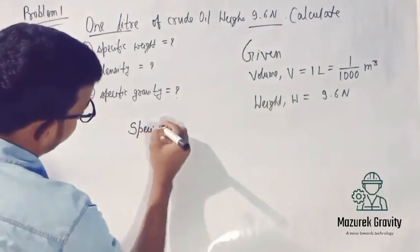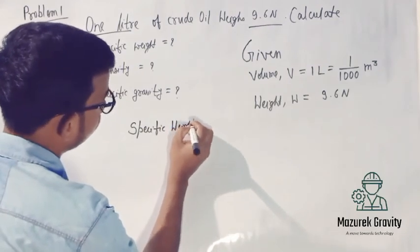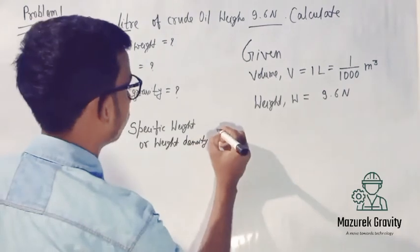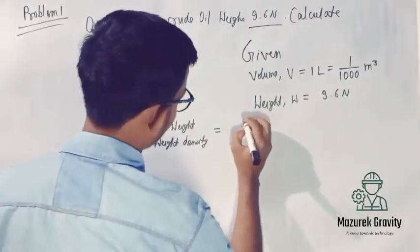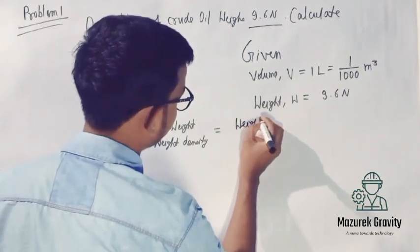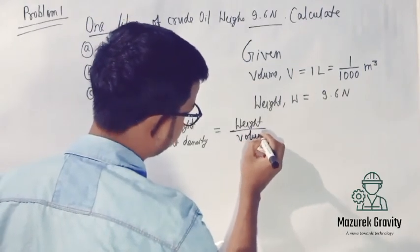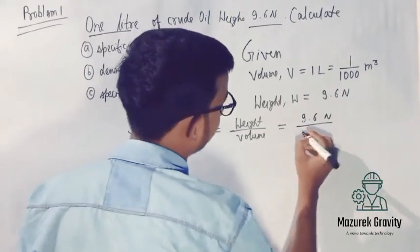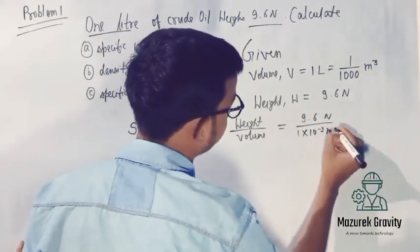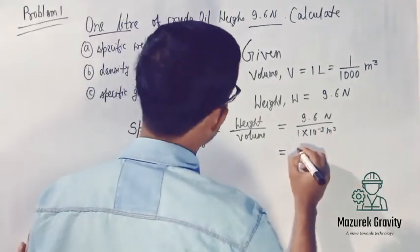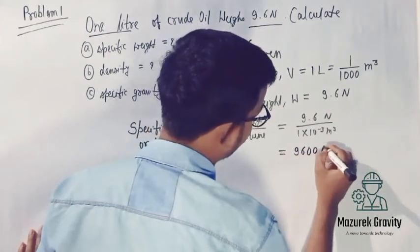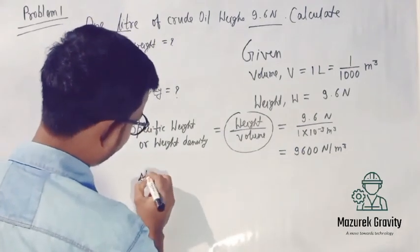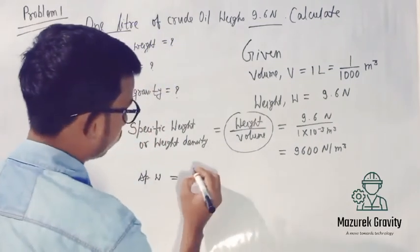Specific weight — also called weight density — is defined as weight upon volume. That equals 9.6 Newton upon 1 into 10 to the power minus 3 meter cube. After calculation, the final value is 9600 Newton per meter cube.